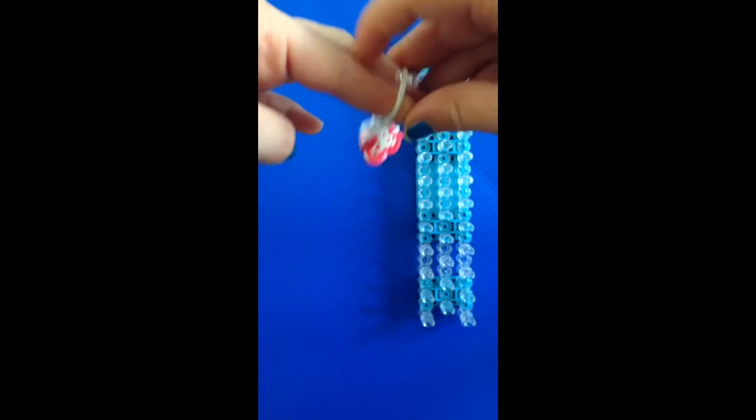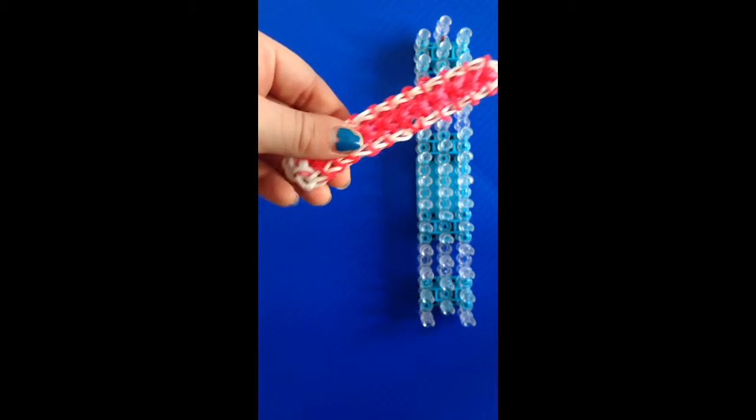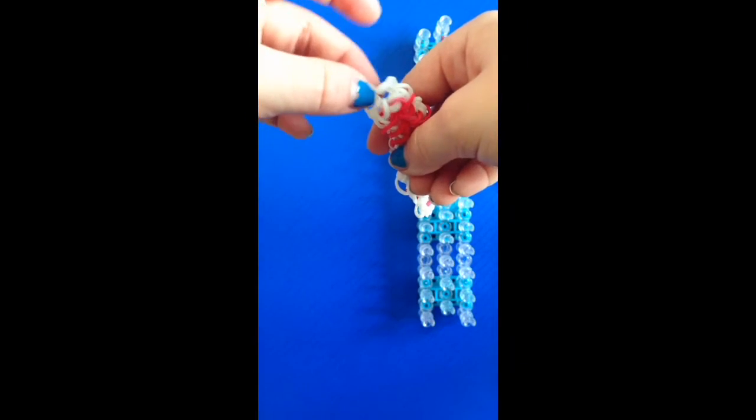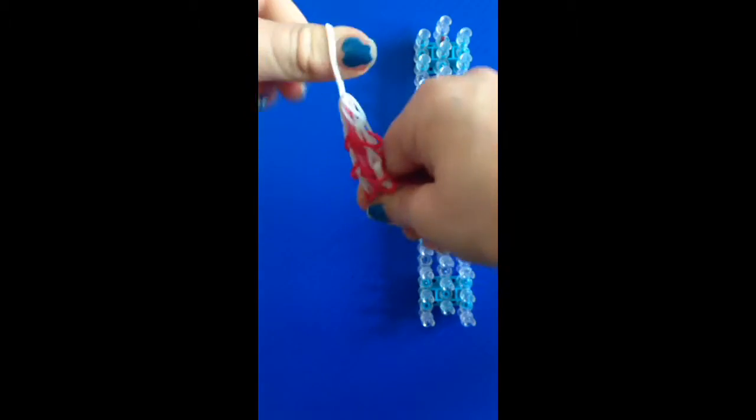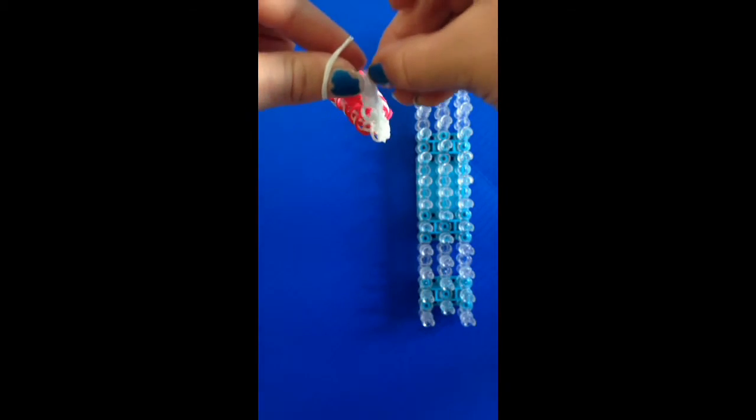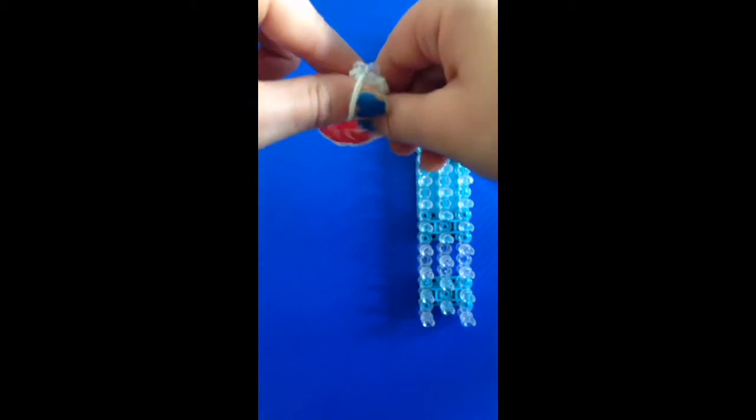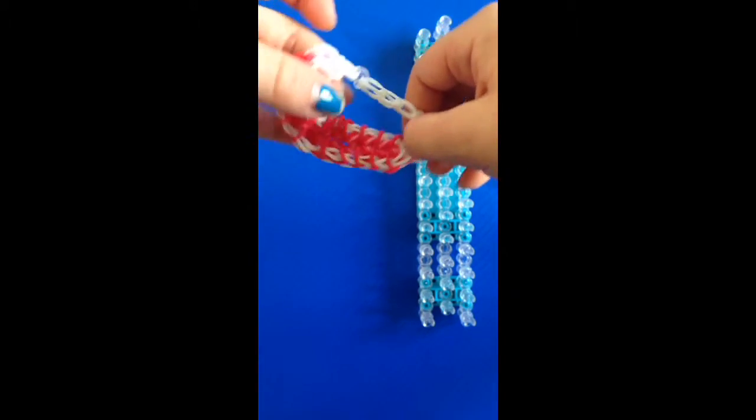And then you could remove your fingers. Go to the very bottom of your creation. You could see this doubled over capping rubber band, and just place the other side of your clip onto there like that.